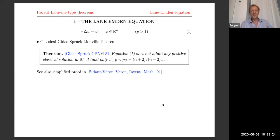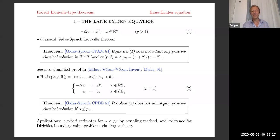Now I would like to consider the half-space case. The reason for that is not purely aesthetic — it also has fantastic applications. When you combine the two cases, whole space and half space, Gidas and Spruck discovered by the rescaling method you can derive a priori estimates in the subcritical range. From these a priori estimates, you can get existence for Dirichlet boundary value problems asymptotically equivalent to the Lane-Emden equation by degree theory.